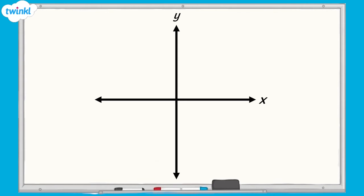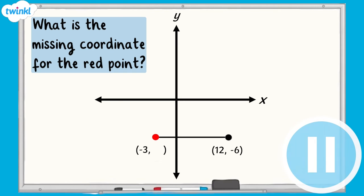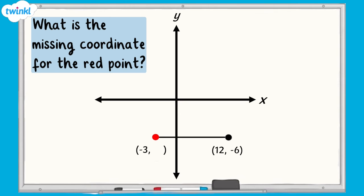Now let's see if we can work out missing coordinates on an unlabelled four-quadrant grid like this. This grid is similar to the previous grid, but now instead of only one quadrant, we can have coordinates in all four quadrants. If I draw a straight horizontal line between the red point and the black point on the grid, can you work out the missing coordinate for the red point? Both points are the same distance down the y-axis, which means they both share the same y-axis coordinate of negative 6. So the missing coordinate is negative 6.